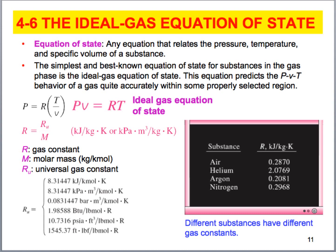Another thing I'd like to introduce is the ideal gas law. More broadly, we can start with a discussion of the equation of state — something that relates pressure, temperature, and specific volume. The most popular equation of state is the ideal gas equation. The pressure times specific volume equals the ideal gas constant times absolute temperature. The ideal gas constant is calculated using the universal gas constant, which is 8.314 kilojoules per kilomole per degree K, divided by the molecular weight of the substance.